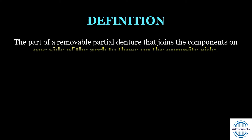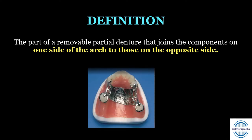To start with, first is the definition, which is very important. What are major connectors? The part of the removable partial denture that joins the components on one side of the arch to the other side, that is the opposite side. So one side of the components are joined to the other side by a major connector — this is the major connector in the RPD framework.